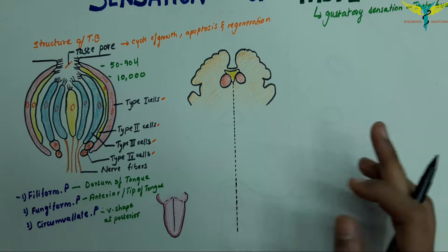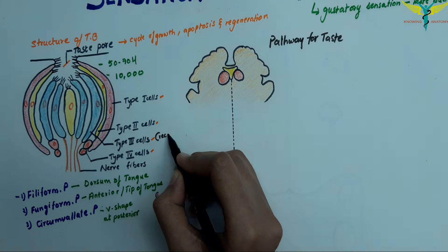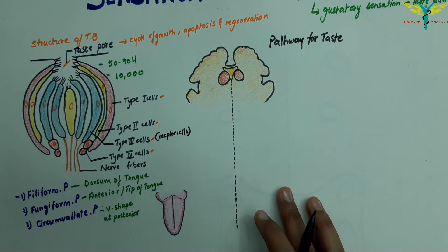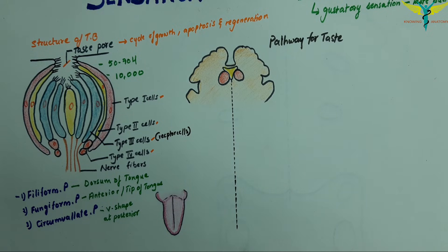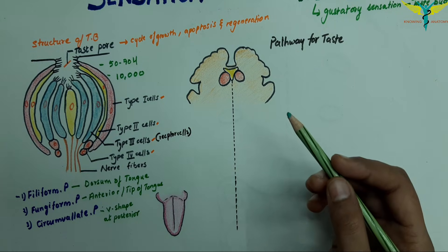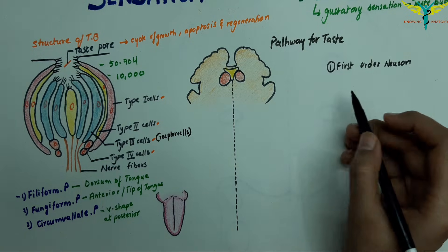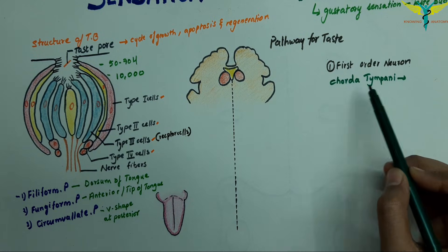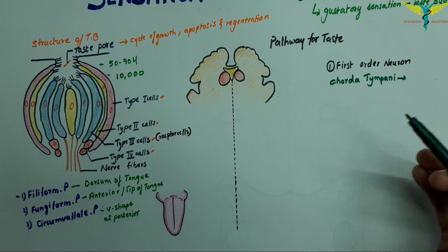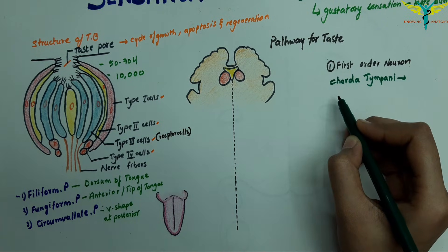The receptors for taste sensation are the Type 3 cells. Each taste bud is innervated by about 50 sensory nerve fibers, and each nerve fiber supplies at least 5 taste buds. The first-order neurons for taste sensation are in the nuclei of 3 different cranial nerves situated in the medulla. The fibers reach these cranial nerve nuclei via: first, the chorda tympani branch of the facial nerve.